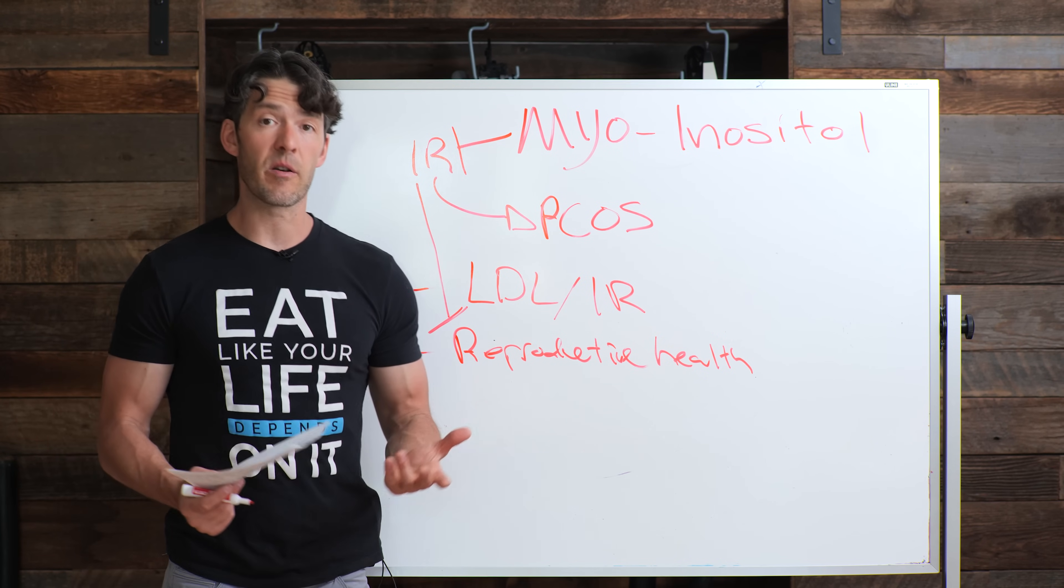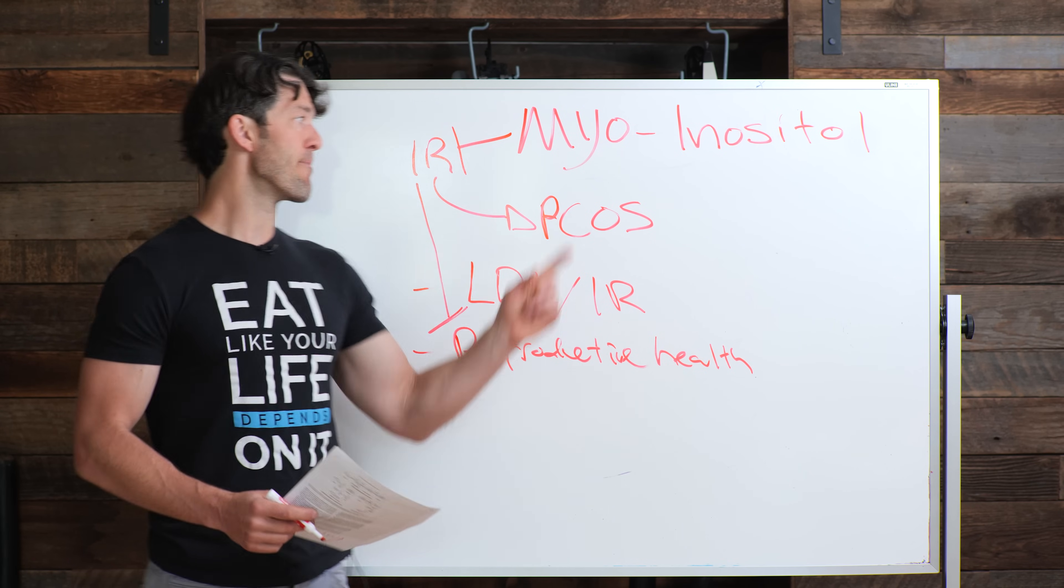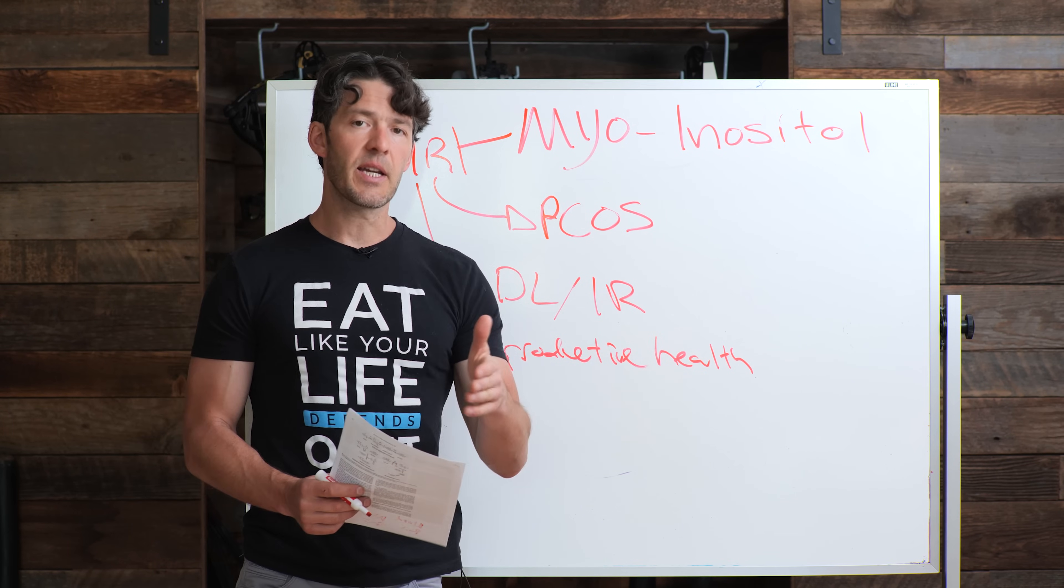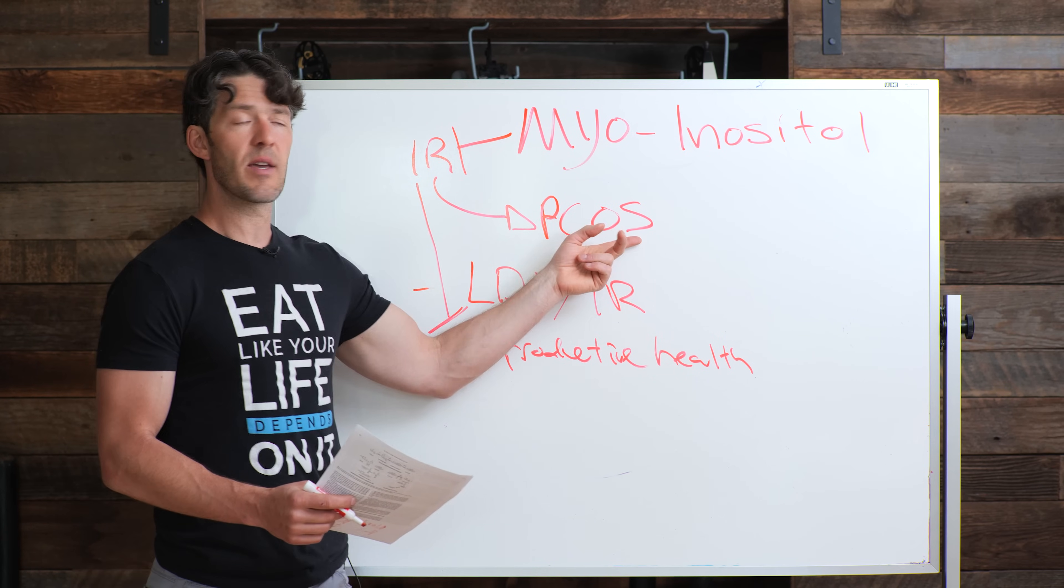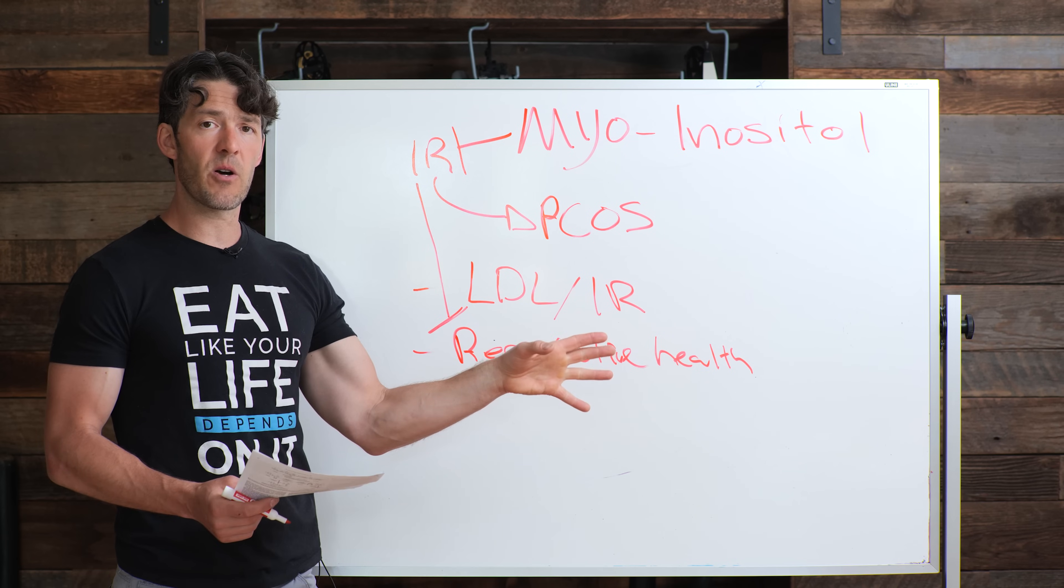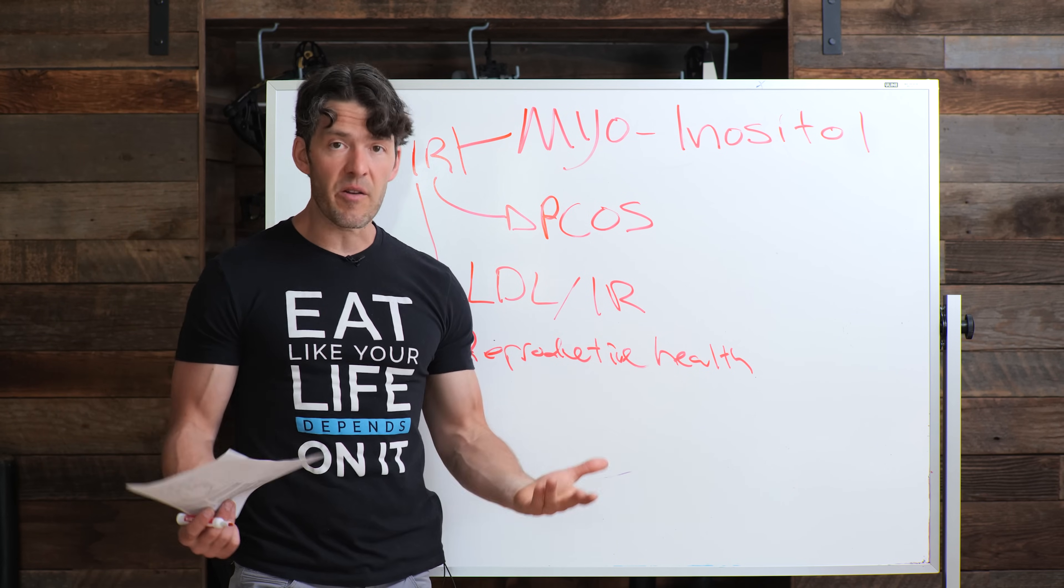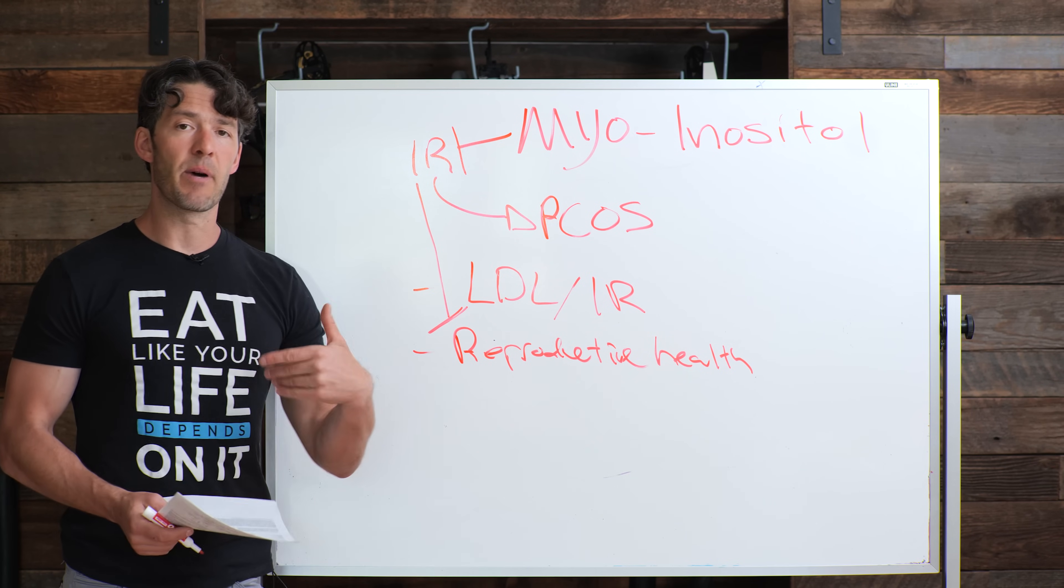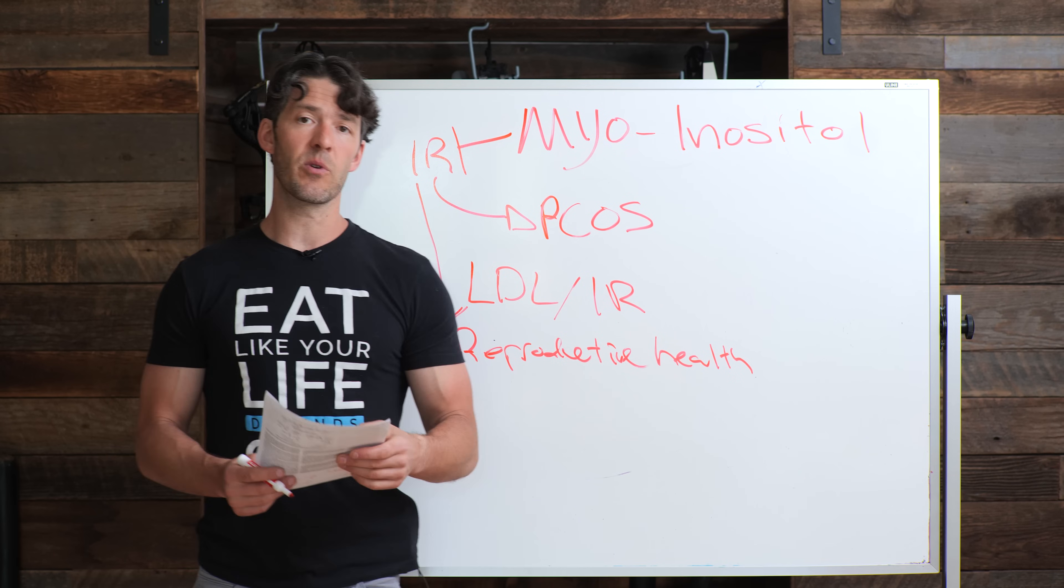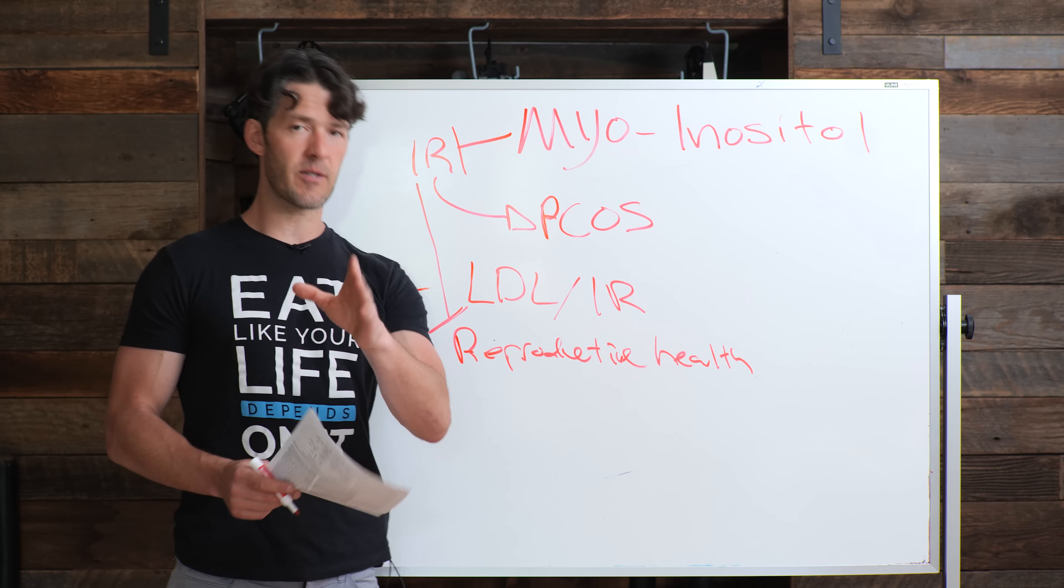So that's it for myo-inositol. I would definitely read a little bit more on this. A lot of people are not aware of it. Some people want to know, what's the difference between d-chiro-inositol and myo-inositol? Well, d-chiro-inositol has been studied a little bit more in PCOS. It is a little bit more expensive, though. So I think myo-inositol is more accessible. It's really affordable. Myo-inositol is also found in food, various animal foods and plant-based foods. So it is in whole foods.